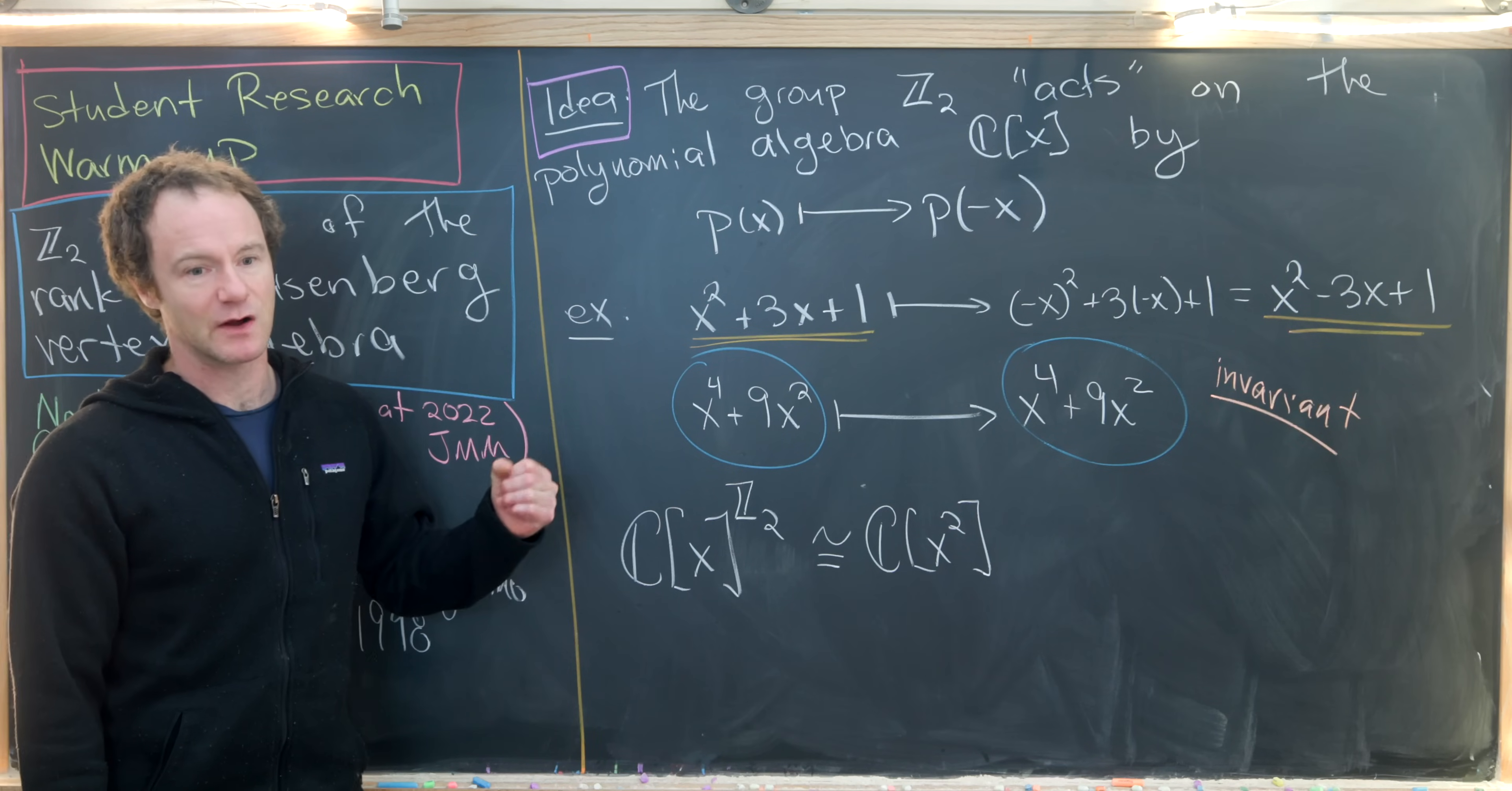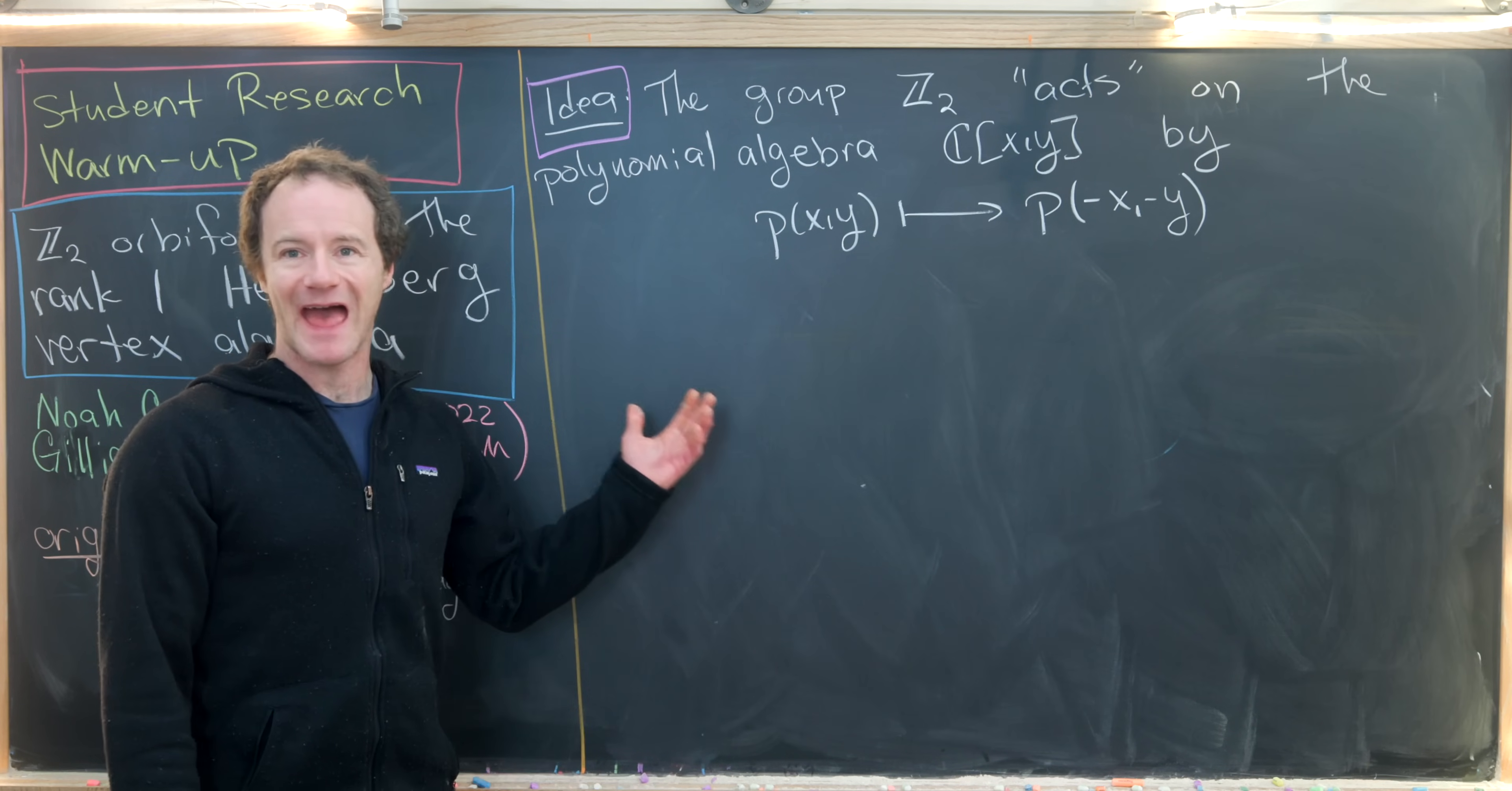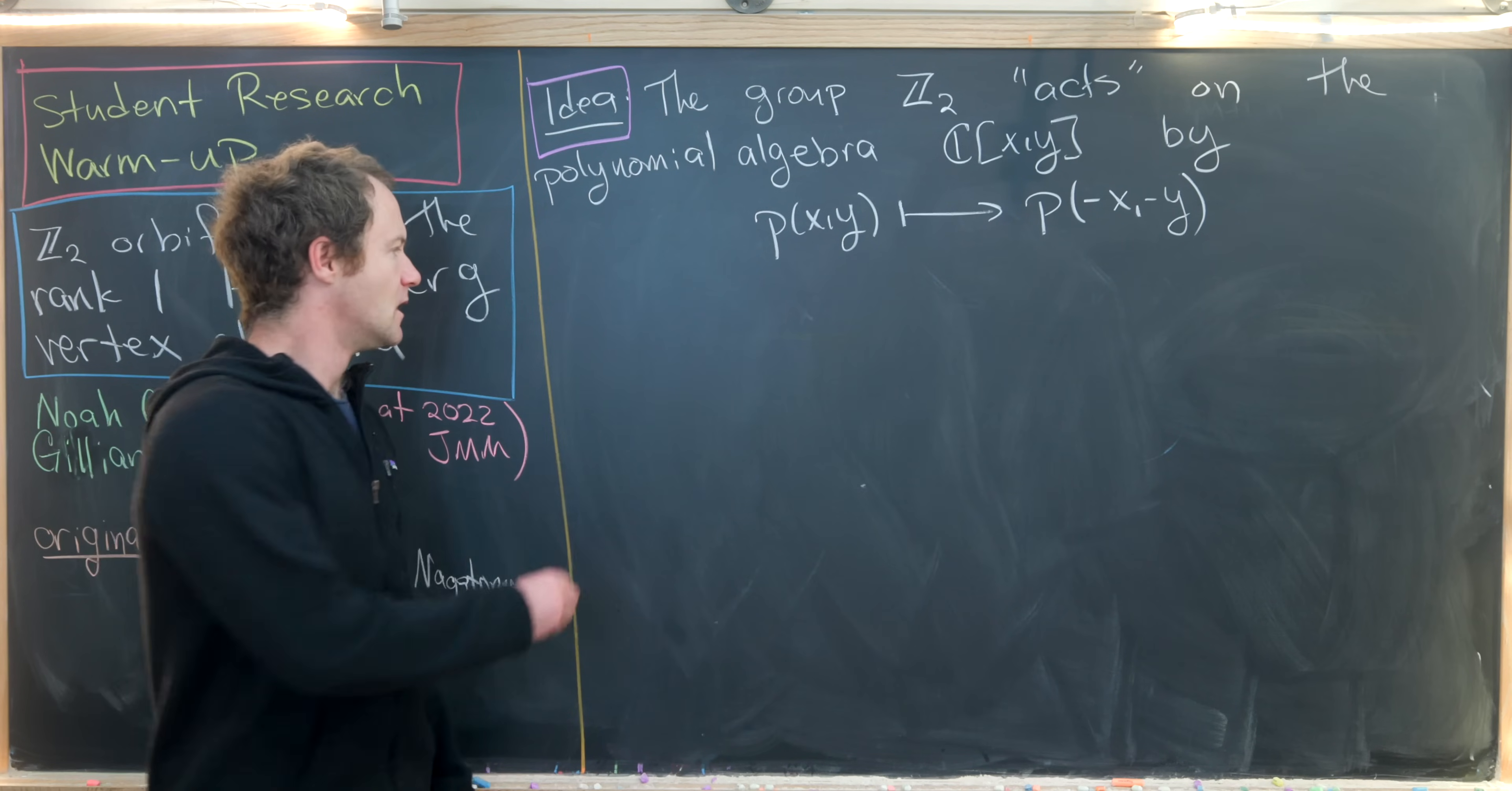This is maybe the most basic version of the kind of thing that I did with the students. Let's ramp it up by one step. We would look at a Z2 action on a two variable polynomial ring C[X,Y]. The action is exactly the same: we send X to minus X and Y to minus Y, and that action is happening simultaneously.